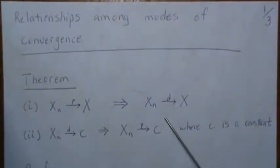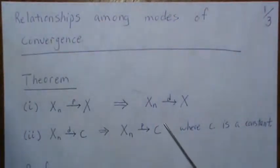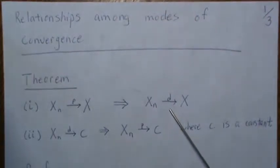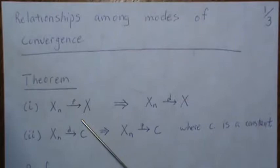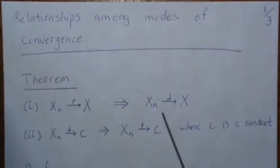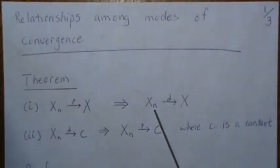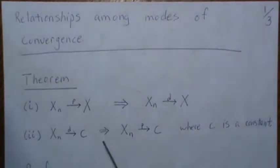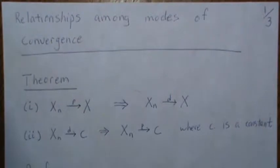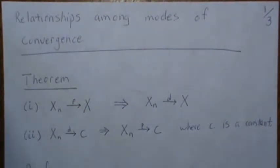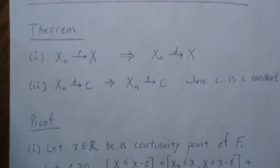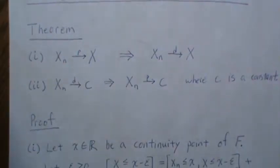But in general, and that'll be the fourth video, convergence in distribution doesn't always imply convergence in probability. But if convergence in distribution is to a constant, that does imply convergence in probability to that constant. So those are two things we're going to prove in this video. Let's just jump right in and prove number one.